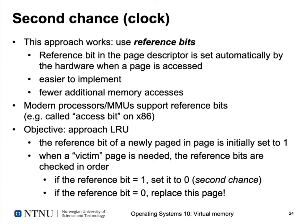The objective of implementing second chance is to approach the efficiency of LRU. When using this algorithm, we set the reference bit of any newly paged-in page to one initially. When we need to page out a page, we check the reference bits in order. If we find a page with a reference bit set to one, we don't replace it immediately — it's an indication it was recently used — so we only set its reference bit to zero, giving it a second chance before eviction.